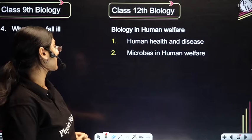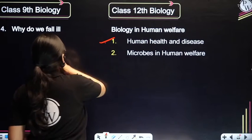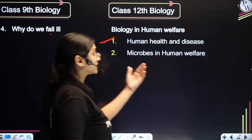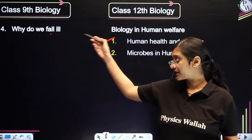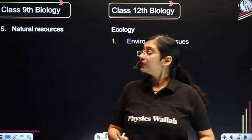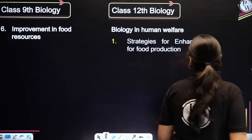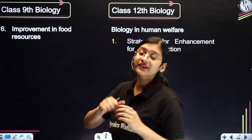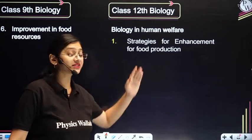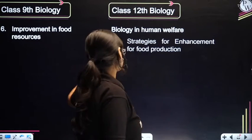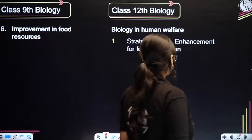The Why Do We Fall Ill chapter of class 9th connects to the unit Biology in Human Welfare in 12th, specifically Human Health and Disease and Microbes in Human Welfare. Natural Resources connects to Environmental Issues in class 12. Improvement in Food Resources, which seems like a social science topic, is similar to Strategies for Enhancement in Food Production, covering animal husbandry and related topics.